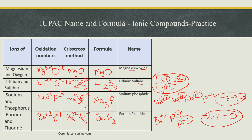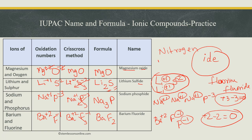That's how we write and name binary ionic compounds. In naming, the only point you have to remember is the I-D-E ending. So fluorine becomes fluoride, oxygen becomes oxide, iodine becomes iodide, and nitrogen becomes nitride. That's how we name ionic compounds, especially the binary compound. We will continue with the next one now.